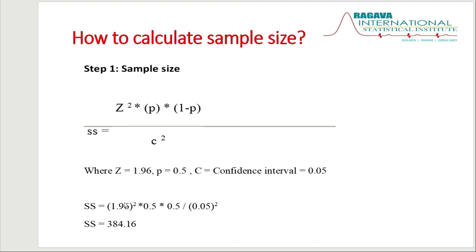If we substitute these constant values into the formula, we get 384.16. This is step number one, and it is not the final sample size — it is a constant result for all problems. There are two steps needed for the full calculation of sample size, so now we will look at step number two.